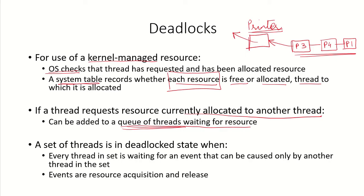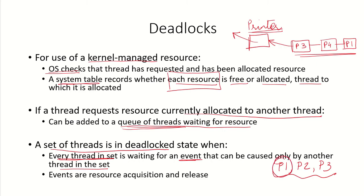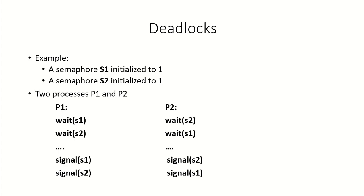We can say a set of threads is deadlocked when every thread in the set is waiting for an event that can only be caused by another thread in the set. For example, if p1, p2, p3 are three deadlocked processes, each process is waiting for a resource acquisition and release — each has requested some resource, is holding another resource, and is waiting for the other process to release its held resource.